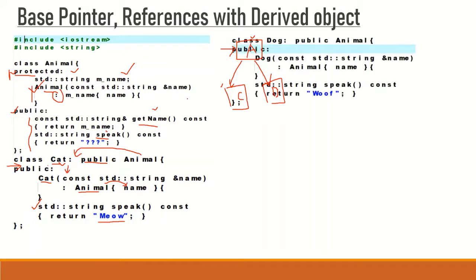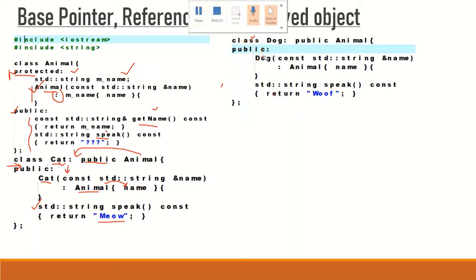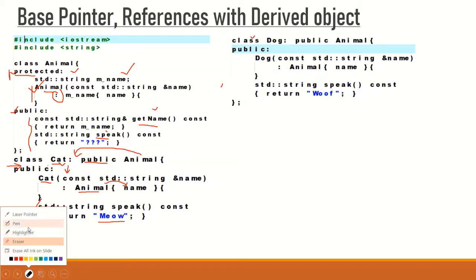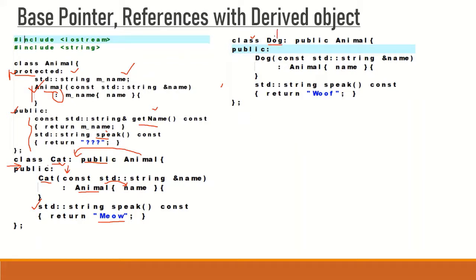Similarly, the Dog class is inherited from Animal class just like the Cat class, following the same structure. We can say dog is an animal and cat is an animal, which is why both Dog and Cat are inherited from Animal class. The Animal class constructor is called from the Dog class constructor as well, using public mode of inheritance. The Dog class also has one member function called speak.